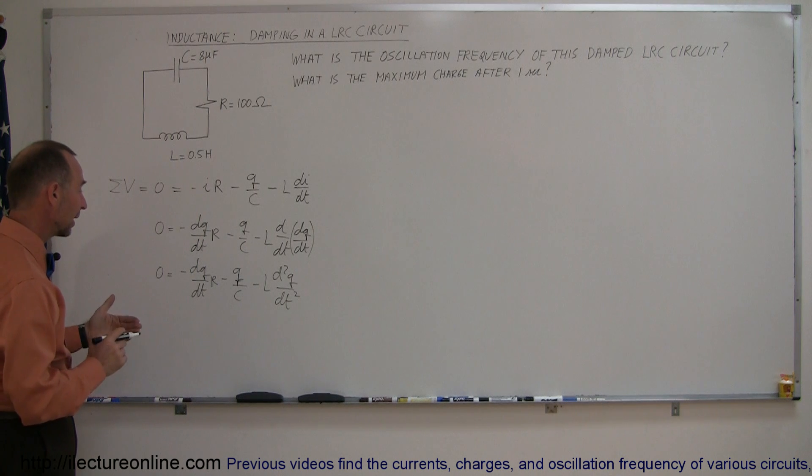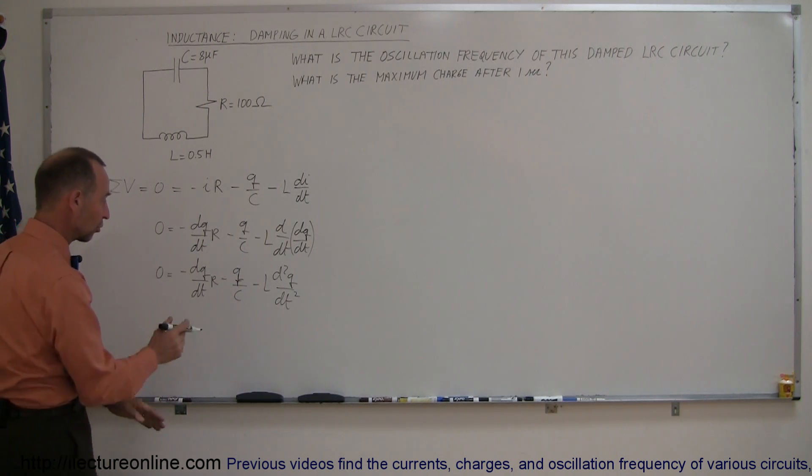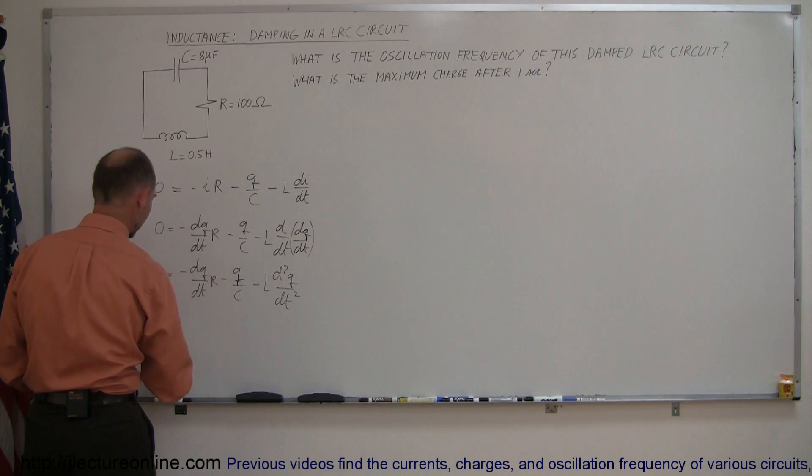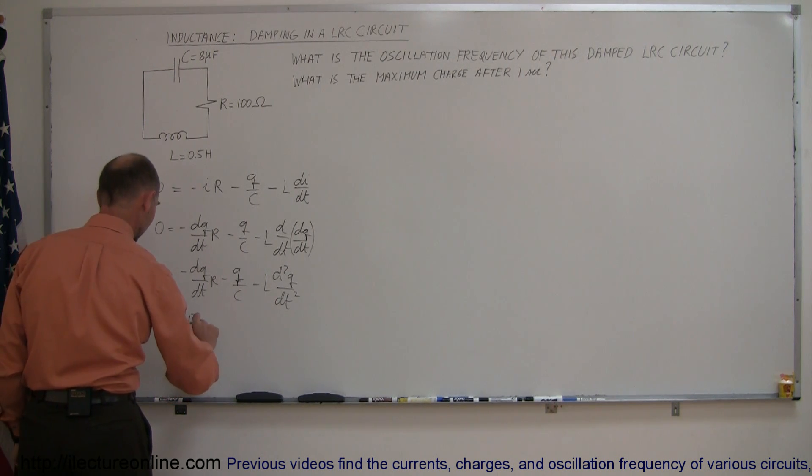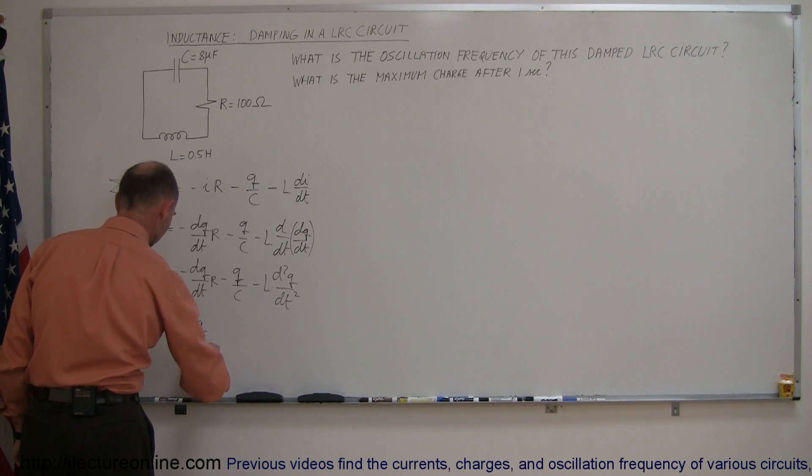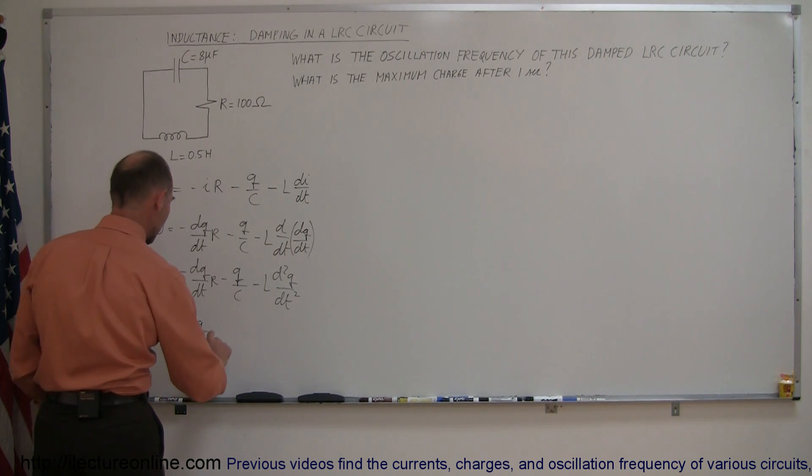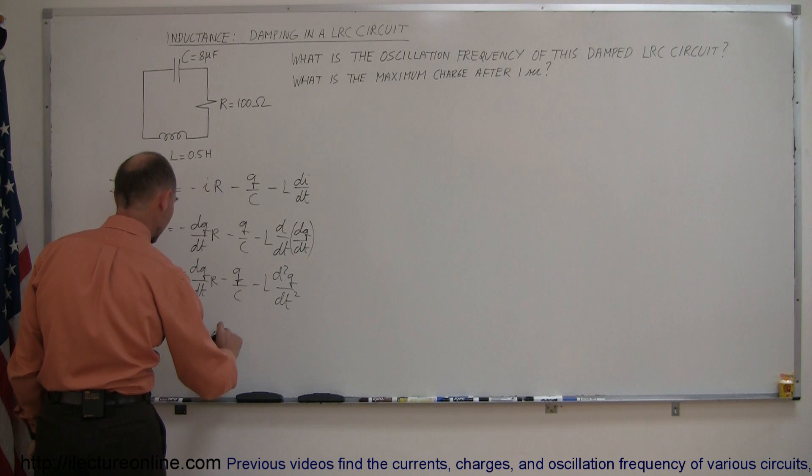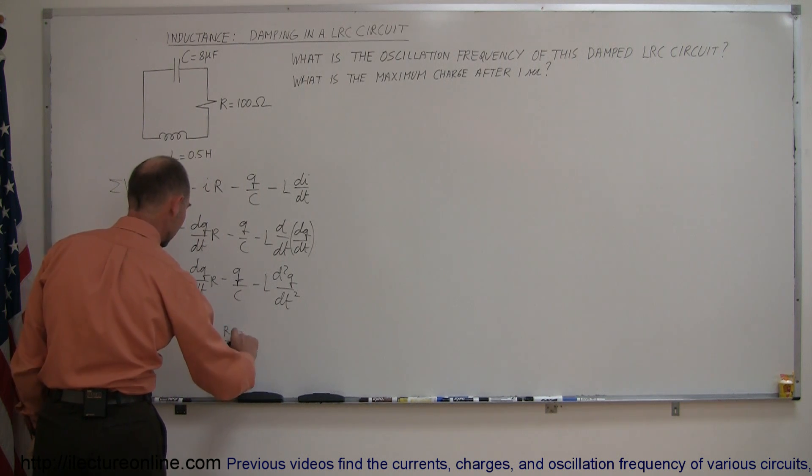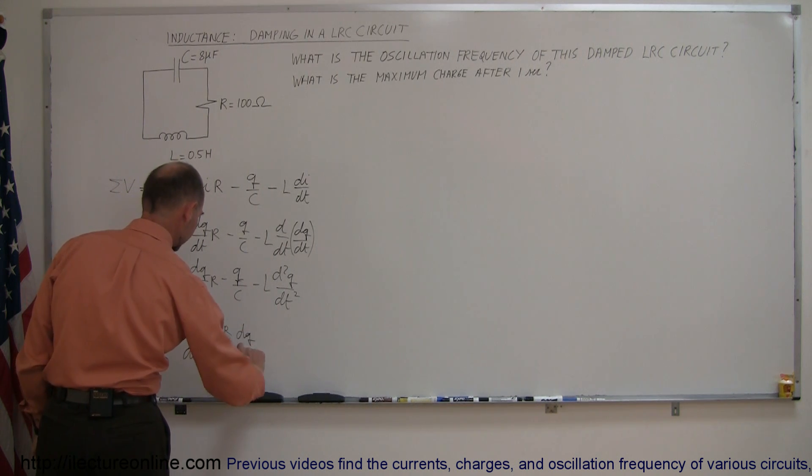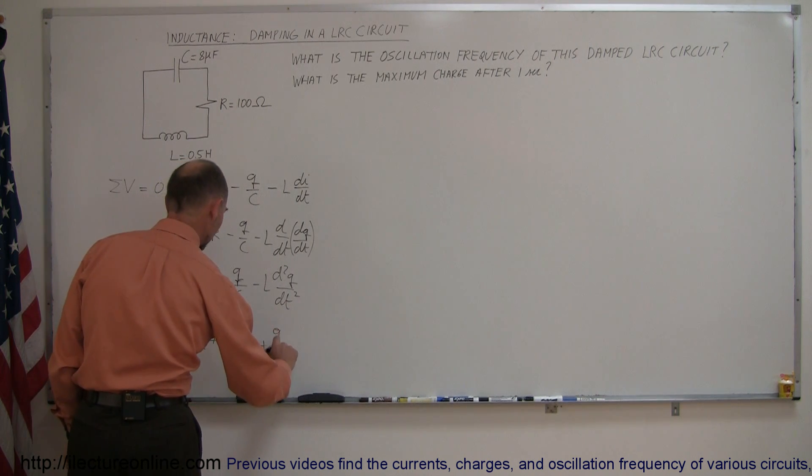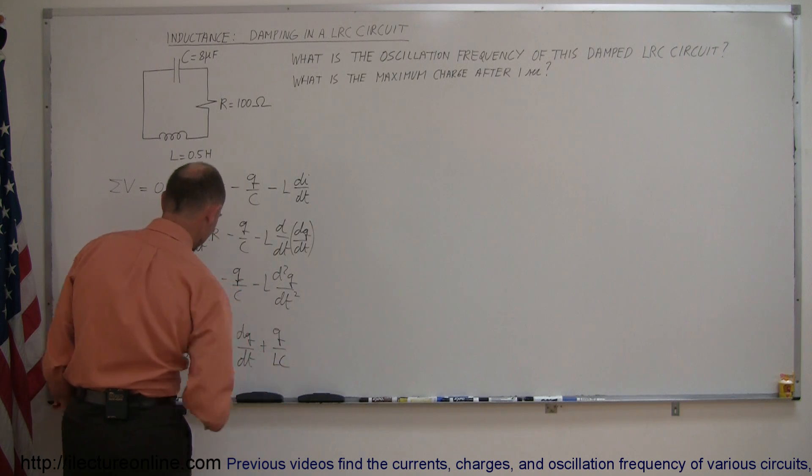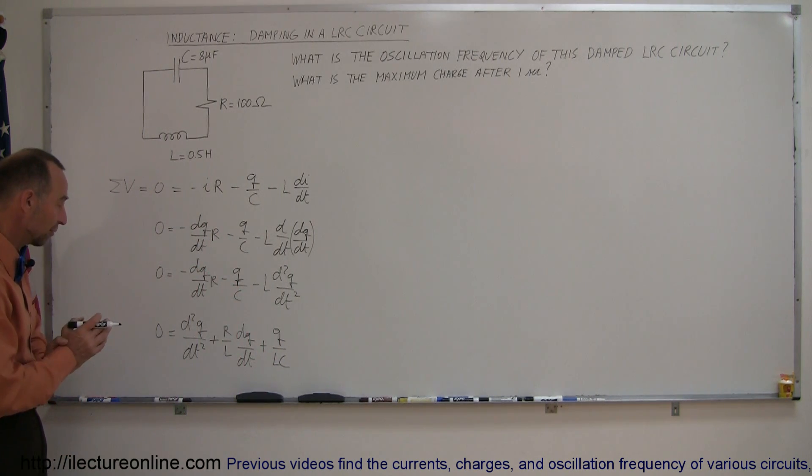Now we're going to divide both sides by L to get rid of the negative signs and rearrange the terms. So zero is equal to if we divide everything by L we get d²Q/dt² plus R over L dQ/dt and finally we get plus Q over LC and so this is a very different kind of differential equation that we saw before because of the resistance in there we have three terms.